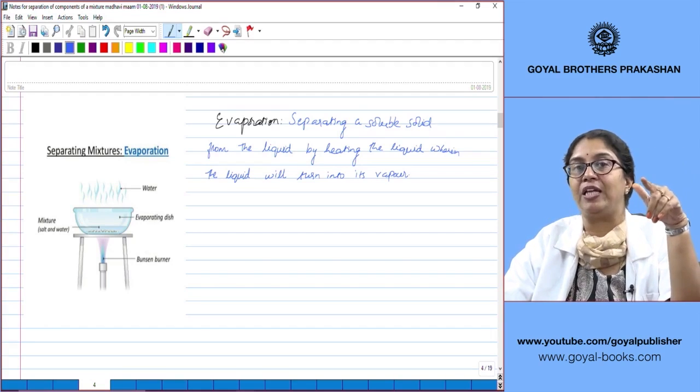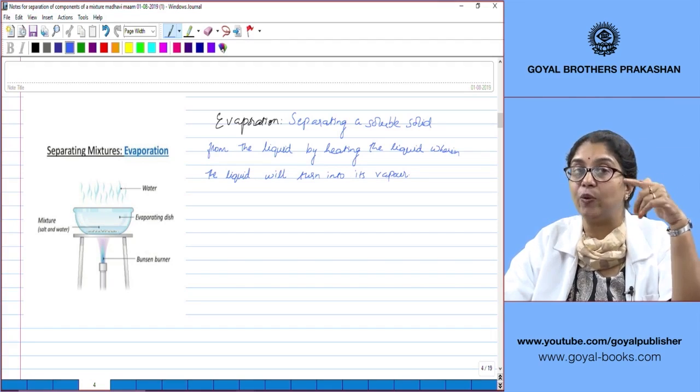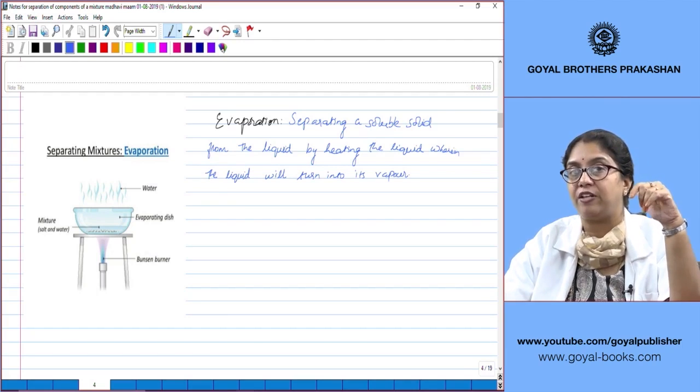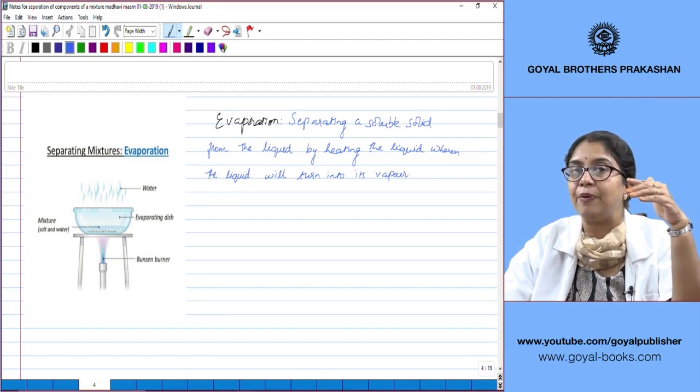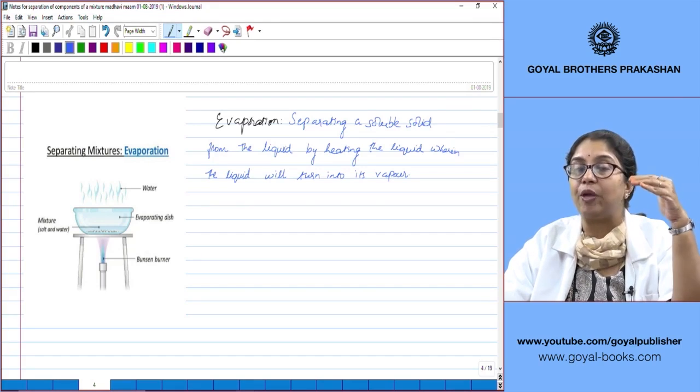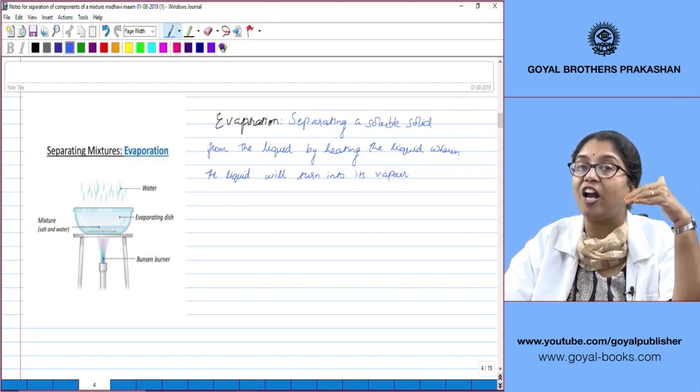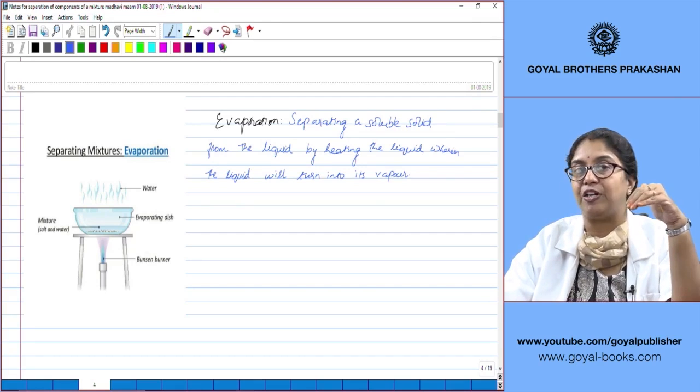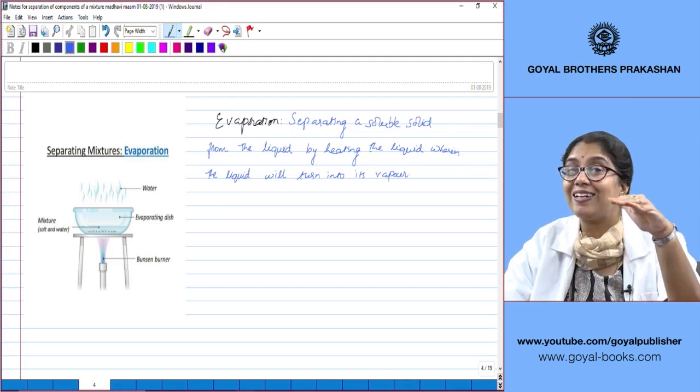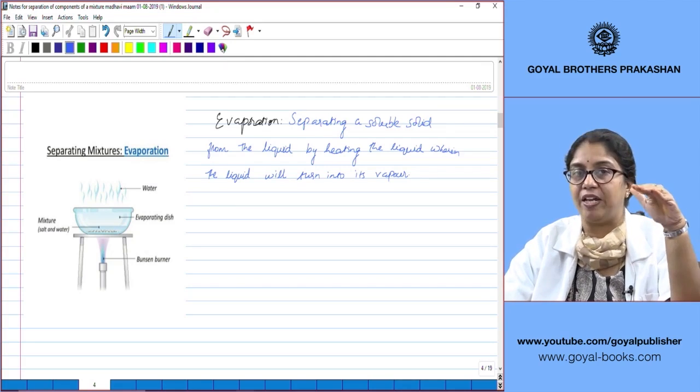Whereas in boiling you are converting a liquid to its vapor state by heating it up to its boiling point. For example, in evaporation water can evaporate at any temperature below 100 degrees. When water changes into its vapor state below 100 degrees it is called evaporation, but when water changes to vapor state at 100 degrees it is called boiling.